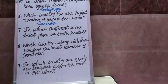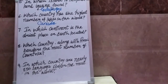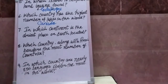Question number seven: In which continent is the driest place on earth located? Driest means sukha hua, sukha sthan. Prithvi par kis mahadweep mein sabse sukha sthan hai? The answer is Antarctica.